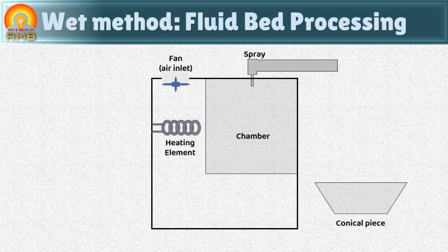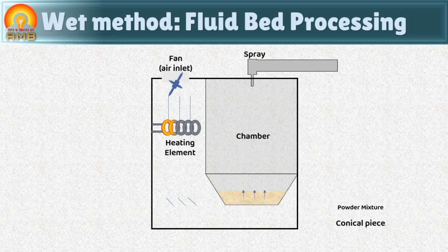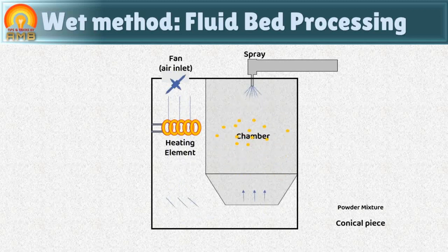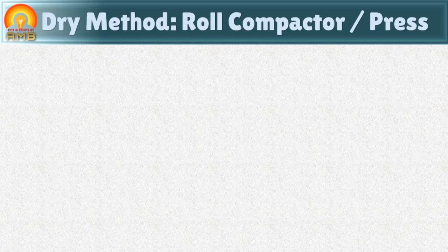Another type of wet method is fluid bed processing. A fluid bed processor is used for preparation of granules. The drug and excipient powder mixture is placed in a conical piece of equipment with a perforated base. Hot air is passed from the bottom so that all the powder gets fluidized in the upper chamber. At the same time, a fine spray of granulating liquid is sprayed on the fluidized powder, causing particles to bind to one another forming granules. The granules are then collected and dried.